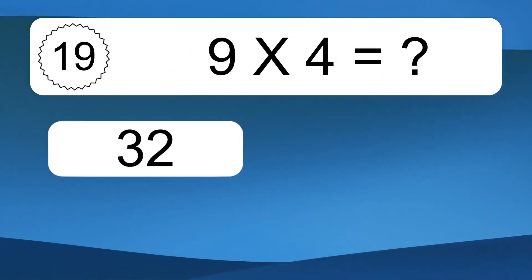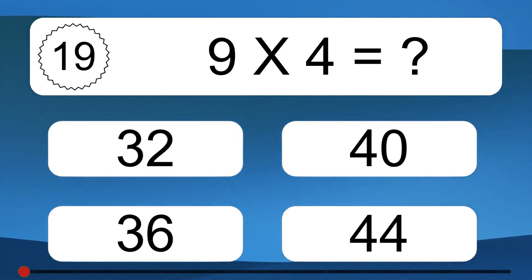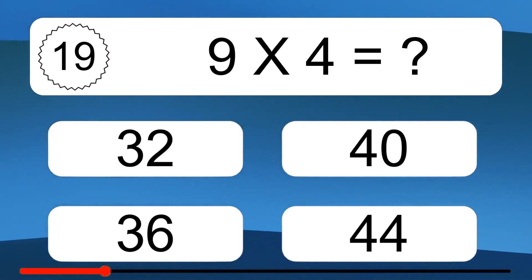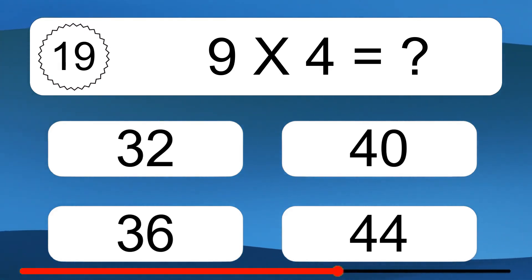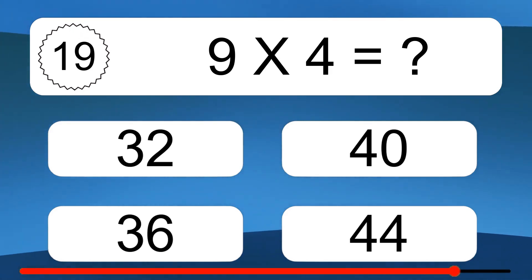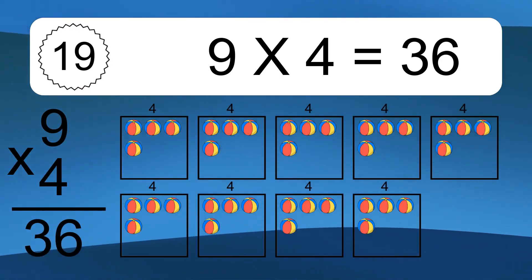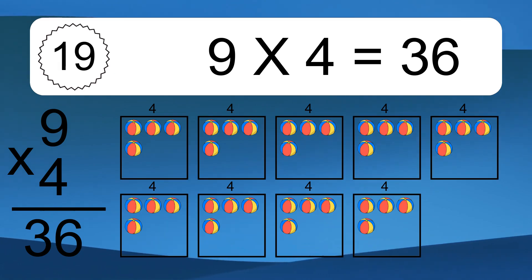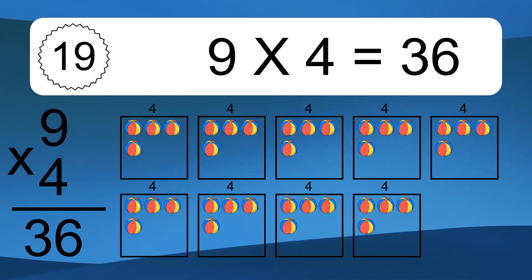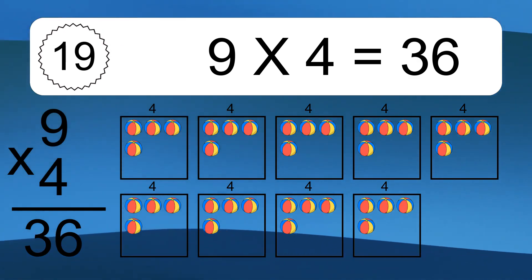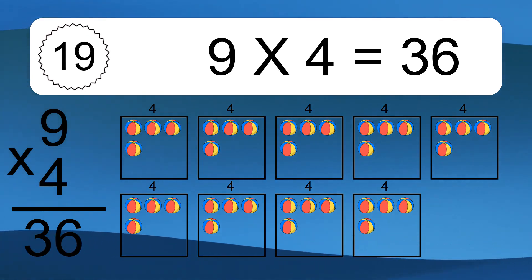9 times 4 equals what? 9 times 4 equals 36. We have 9 boxes, and each box has 4 colorful balls inside. If you count all the balls in all the boxes together, you will have 9 times 4 balls. This equals 36 balls.